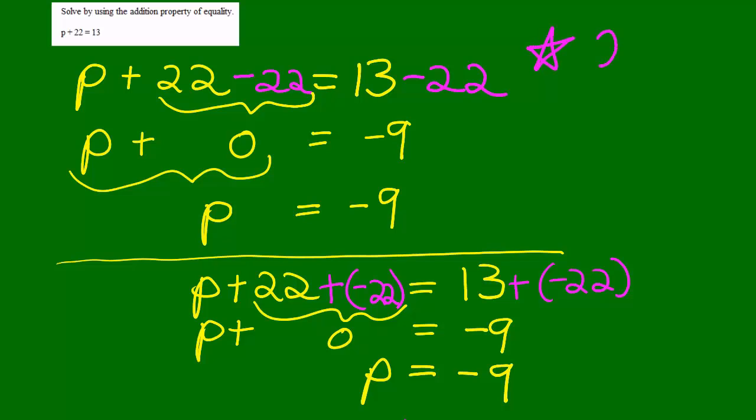Remember, adding opposites equals 0, and 22 and negative 22 are opposites, so when you add them, you get 0.